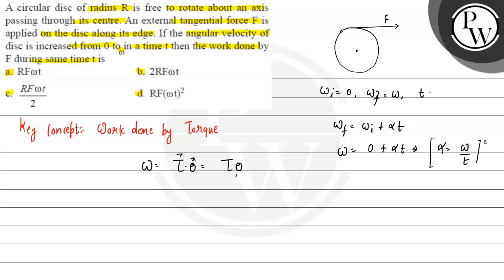Omega equals omega i plus alpha t. And theta equals omega i t plus half alpha t squared. Here omega i value is zero, so when I put zero, the first term becomes zero.